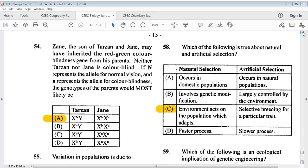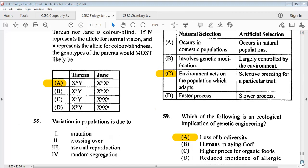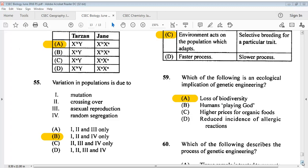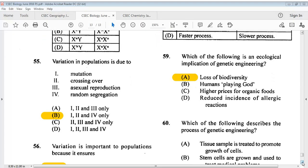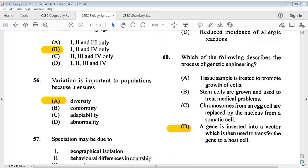The answer for question 58, which of the following is true about natural and artificial selection. Question 59, which of the following is an ecological implication of genetic engineering? The answer is A, loss of biodiversity. Answer for question 60 says which of the following describes the process of genetic engineering? The answer is D, a gene is inserted into a vector which is then used to transfer the gene to a host cell.